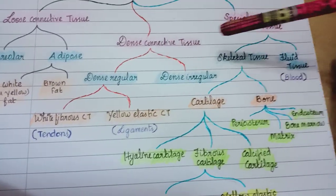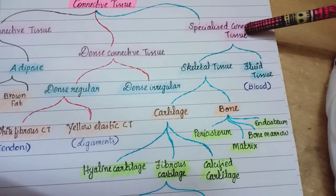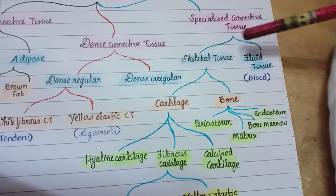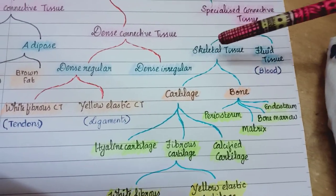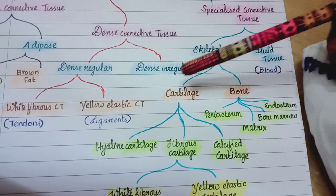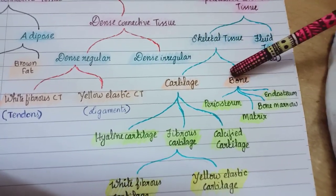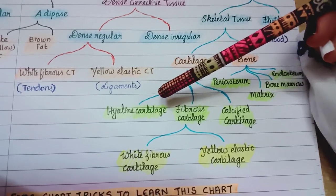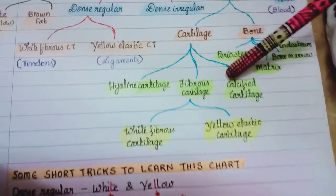Then we have dense irregular connective tissue. Then there is specialized connective tissue, which is of two types: skeletal tissue and fluid tissue. Fluid tissue means blood. Skeletal tissue is classified into cartilage and bone.